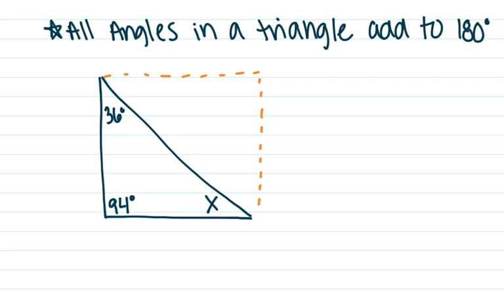90 times four is 360. So if you cut that shape in half, 360 divided by two is 180. That is why there are 180 degrees in a triangle — because it's half of a rectangle's degrees.